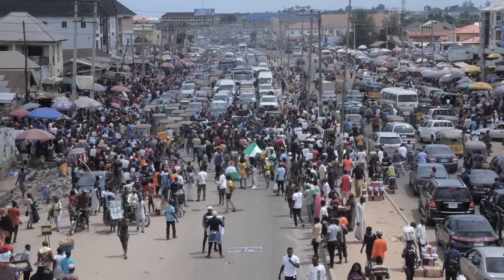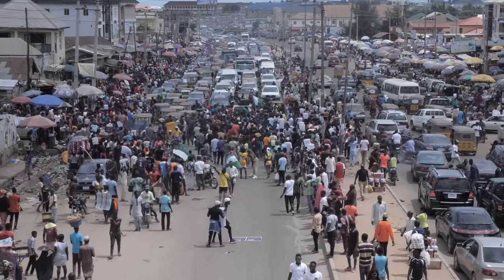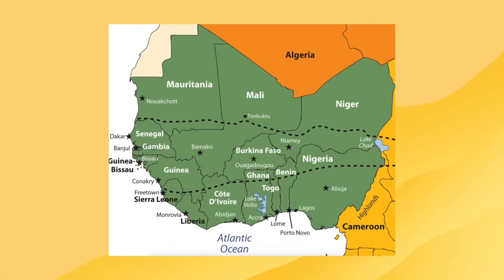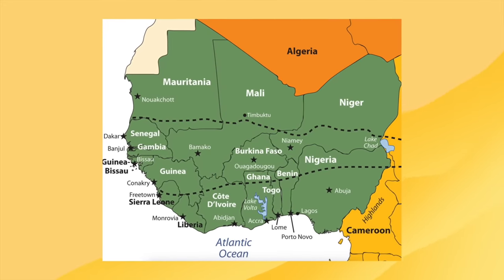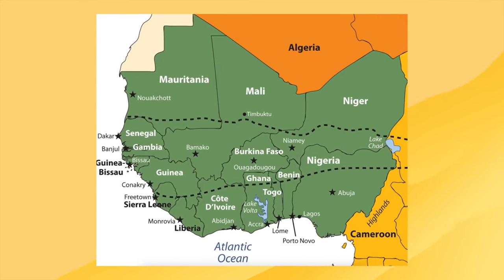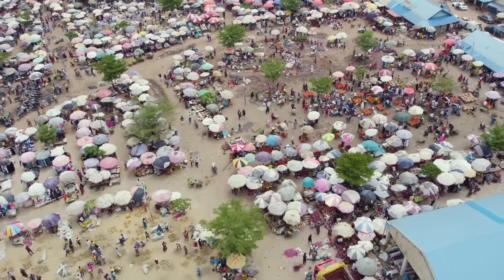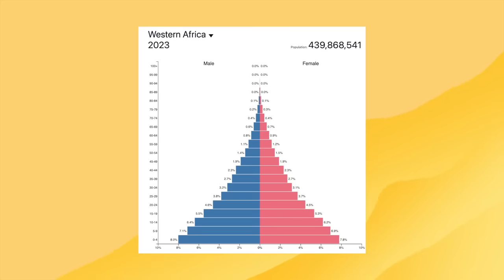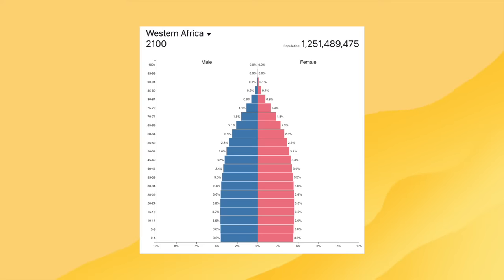Just southwest of the Sahara Desert is a region that is the complete opposite in terms of population — Western Africa, with a population of around 450 million, about the same as the US and Japan combined. Over the coming decades this will change significantly, as the region's population is set to explode. By the year 2100, this region could see a population of over a billion, of which nearly half will live in Nigeria alone.